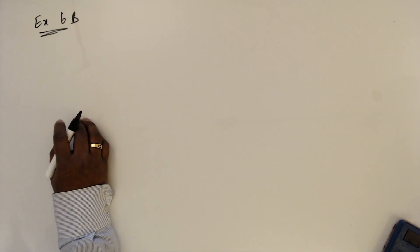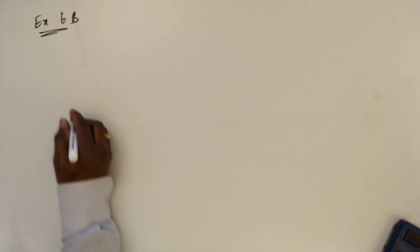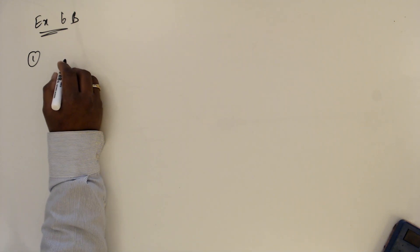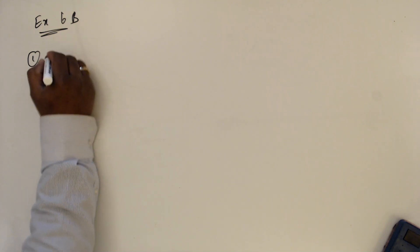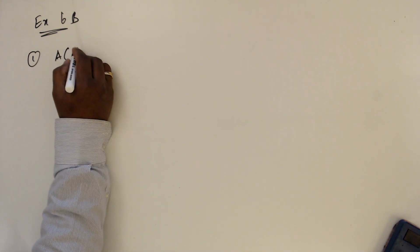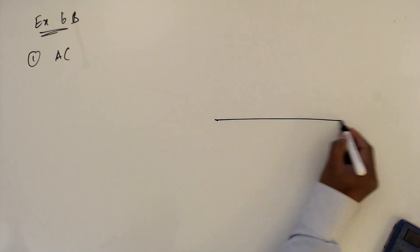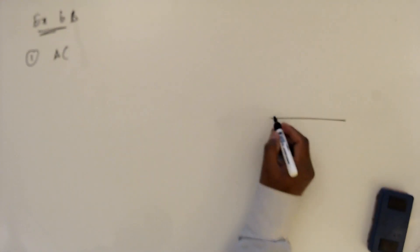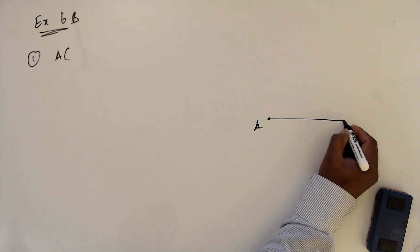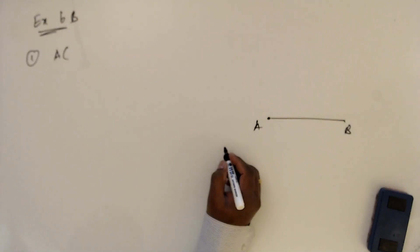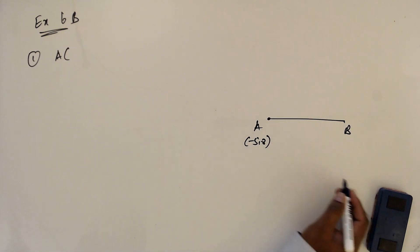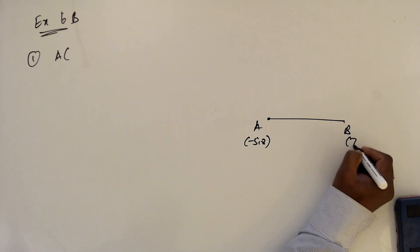Let us discuss Exercise 6B, question number 1: find the perpendicular bisector of the line segment joining each pair of points. So A equals (-5, 8) and B equals (7, 2). This is the line segment AB.